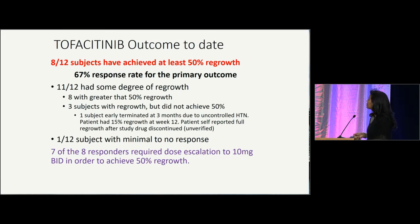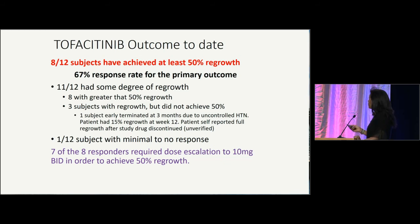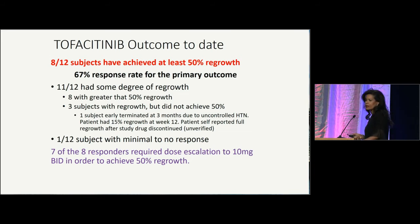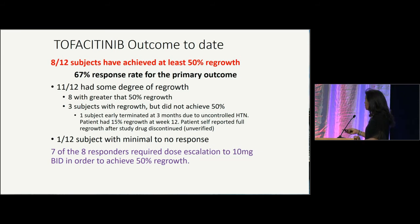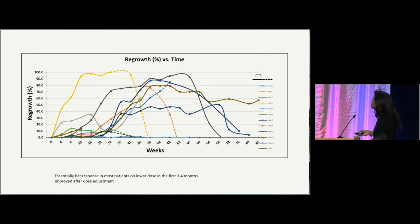Overall findings: eight of 12 patients achieved at least 50% regrowth, which is a 67% response rate for the primary outcome — again an excellent response. For both the ruxolitinib and tofacitinib studies, there were no severe or significant adverse effects; the drugs were quite well tolerated. It should be noted that in our tofacitinib study, seven of the eight responders did require dose escalation to 10 milligrams twice a day in order to generate regrowth.